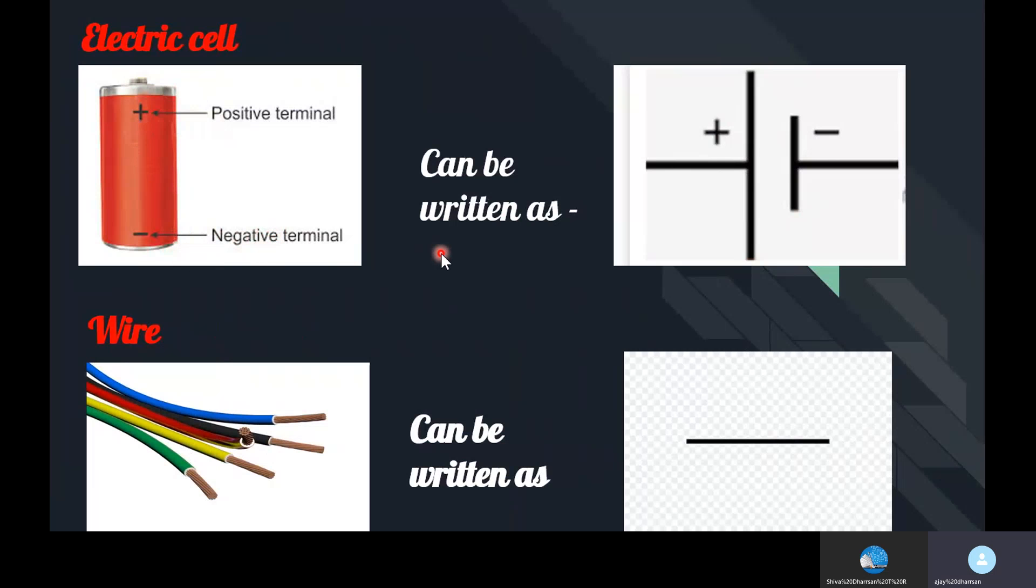Or if the plus and minus marks are not visible, you can identify it by: a positive terminal has a cap in its head, this small portion, but negative terminal has a flat head.